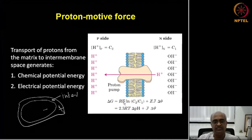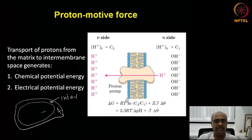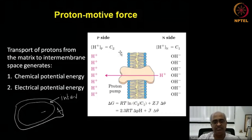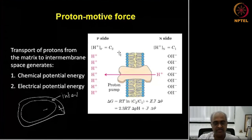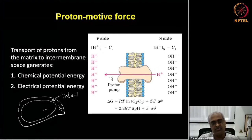When the proton returns back to the matrix, there will be a free energy change equal to RT ln(C2/C1) plus the differential in membrane potential. Z is the electrical charge — for one proton it is just one. If you take log to base 10 instead of natural log, that becomes pH. This equation rearranges into 2.3 × RT × ΔpH plus Faraday's number times the membrane potential difference.